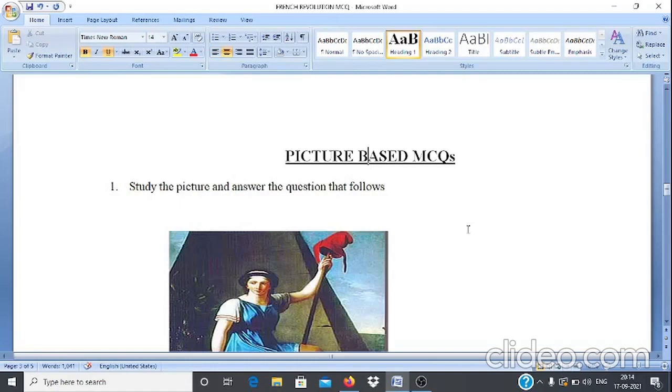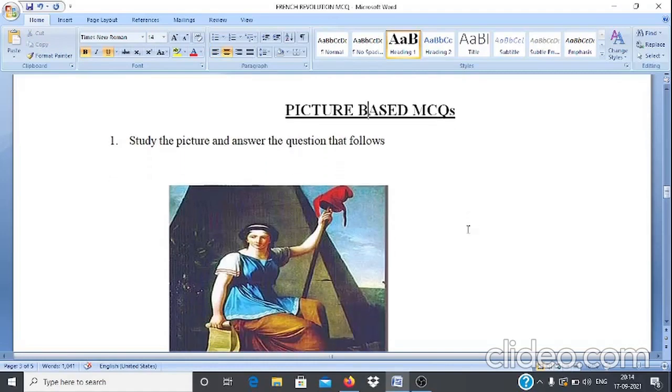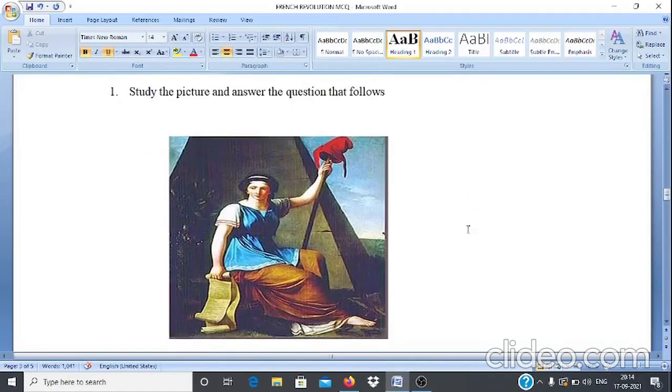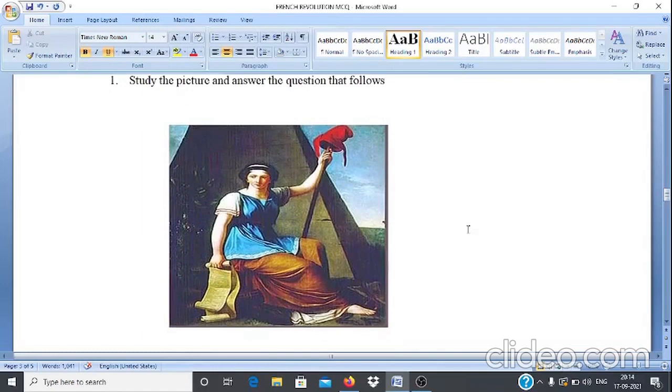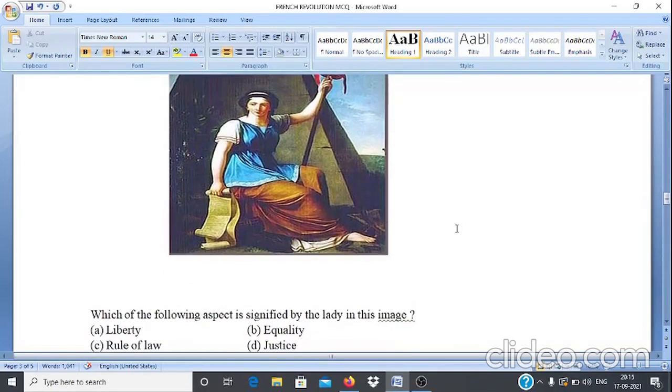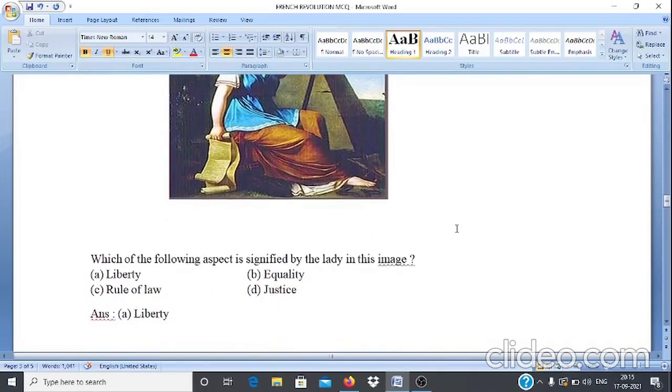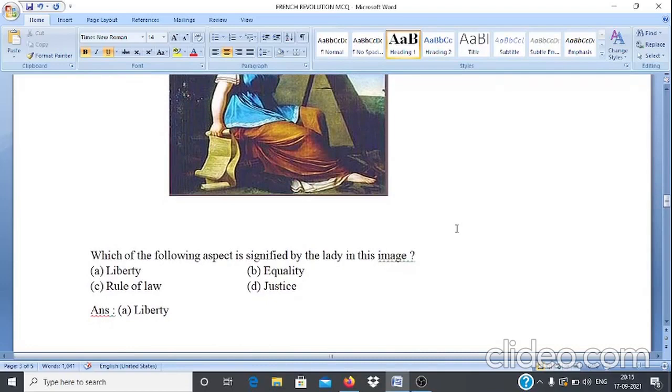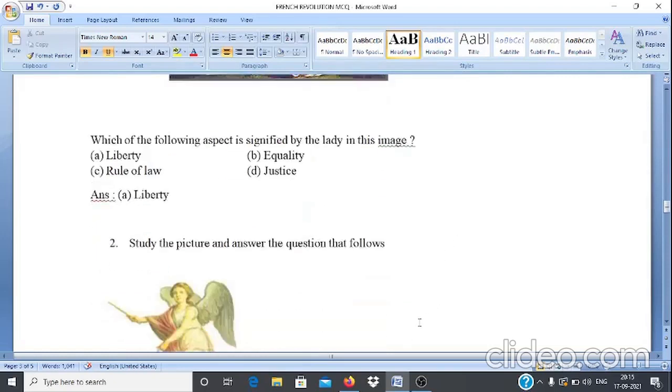Now we will discuss some picture-based MCQs. Study the picture and answer the question that follows. After looking at the picture, question: Which of the following aspect is signified by the lady in this image? Option A: Liberty, B: Equality, C: Rule of law, D: Justice. And answer is option A, that is liberty.